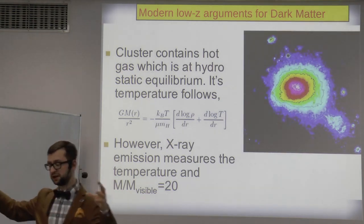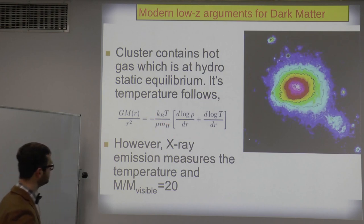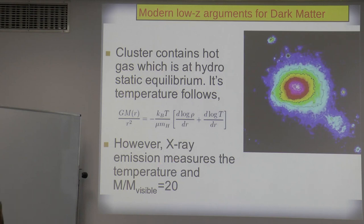Another evidence comes from observations of hot X-ray emitting gas in galaxy clusters. When galaxy clusters collapse, the potential energy is converted to kinetic energy, heating the gas. Using the Boltzmann equation and standard thermodynamics, we can relate the gravitational potential to the temperature and density profile. We again see that the mass needed to create such a temperature and keep the gas bound is 20 times bigger than the visible mass of the clusters — another compelling evidence for dark matter.